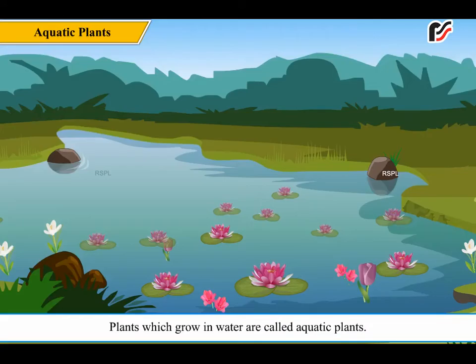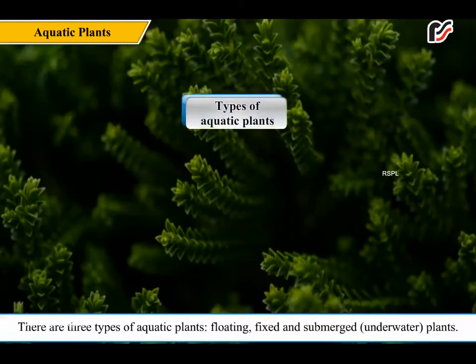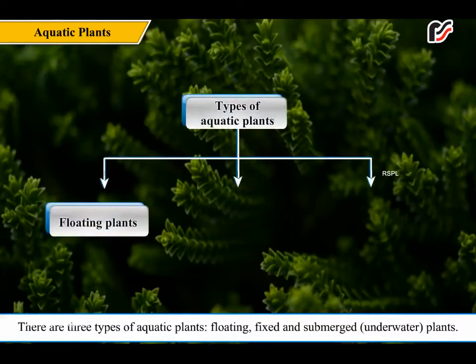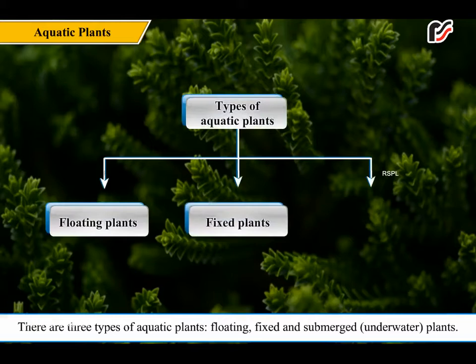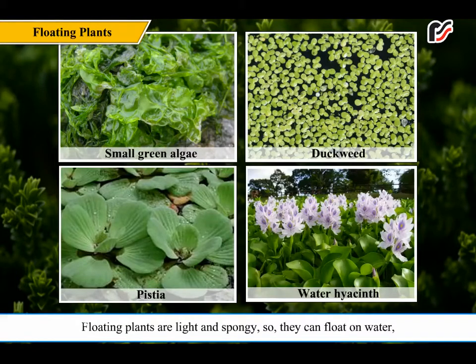Plants which grow in water are called aquatic plants. There are three types of aquatic plants: floating, fixed, and submerged underwater plants. Floating plants are light and spongy, so they can float on water.